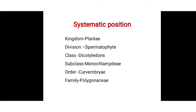Division Spermatophyta: these plants produce a flower during the whole life cycle. The sex organs are multicellular. After fertilization, ovules turn into the seed, and embryo formation also occurs in Spermatophyta division plants.